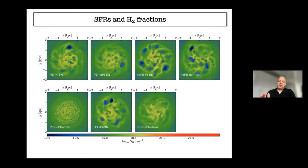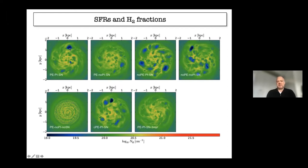We can do a lot of experiments with these simulations. For example, we can test separately the impact of photoelectric heating, photo-ionization, and supernova explosions on the ISM structure. Our fiducial simulation is the top left. The bottom left simulation has no supernova explosions and no photo-ionization — it is very different: no bubbles, no structure, no hot phase, which is clearly not what the ISM of a galaxy looks like. Photo-ionization has some effect but is not extremely strong. Photoelectric heating alone is subtle.